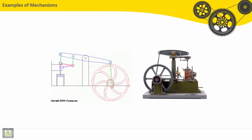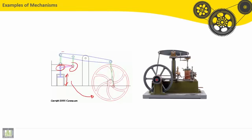Here we have the steam engine. This is a machine based on what? The translation of the piston here under the pressure of the steam will be transformed to a rotation of this wheel. Through what? Through many links and joints.